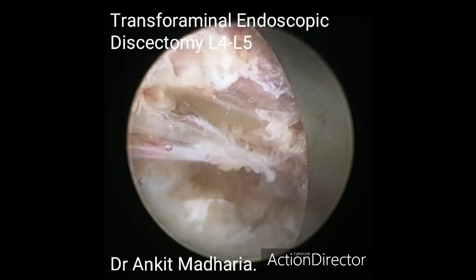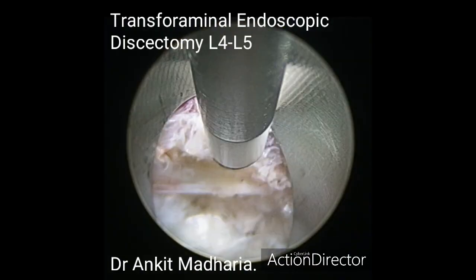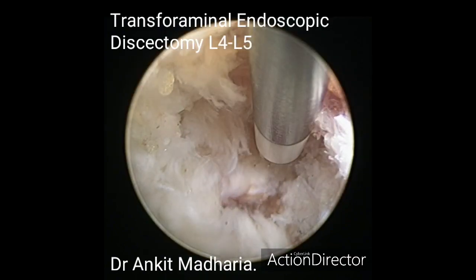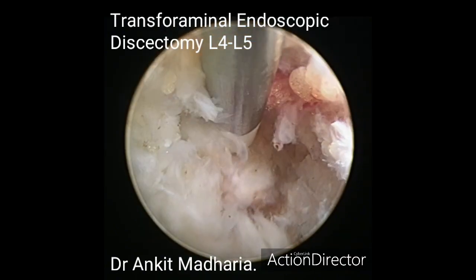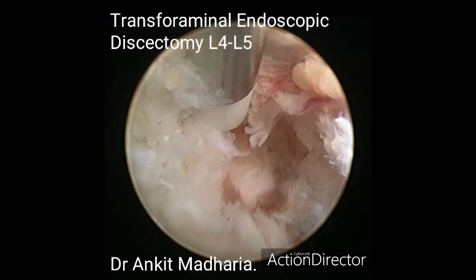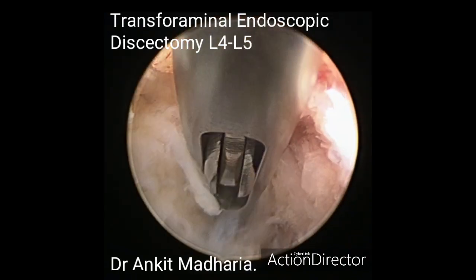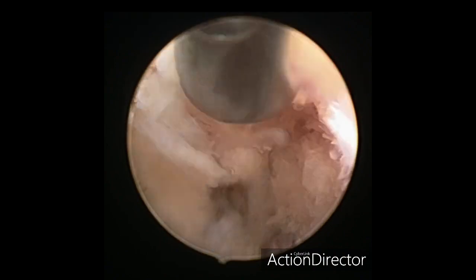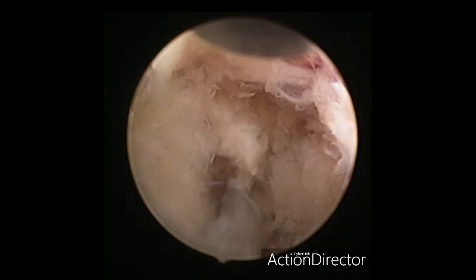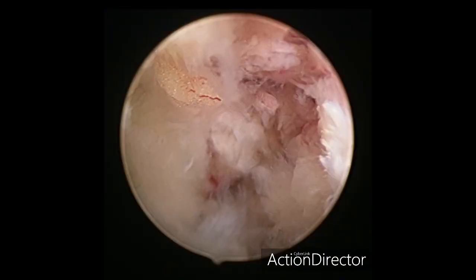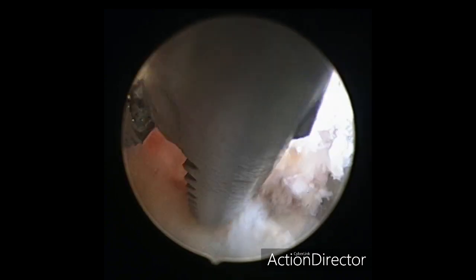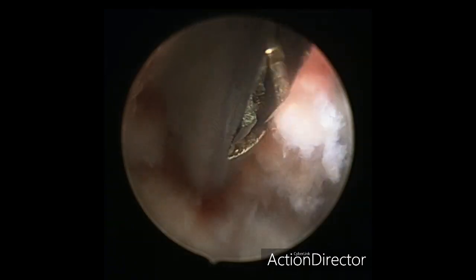After finishing the annulotomy, we can see a central disc fragment which is trapped in the annular fibers and cannot be mobilized easily. The nuclear trapped fragment is removed using a grasper. A flexible grasper is finally used to remove the central and paracentral part of the disc.